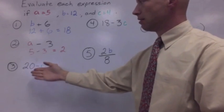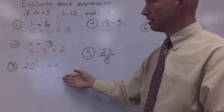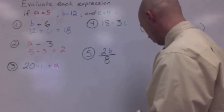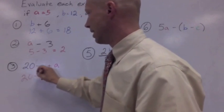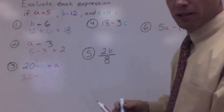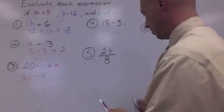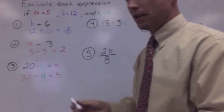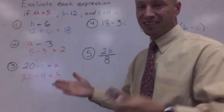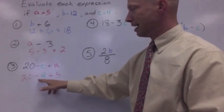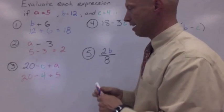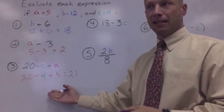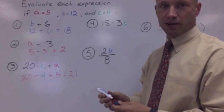Number three, 20 minus C plus A. We've got two variables this time. It's no problem. They both have values that we've been given. 20 minus C, we know C is four, we'll do that in green. Plus A, we know A is red, and that's five. 20 minus four plus five. Looking at my order of operations, minus and plus, they come at the same time. It doesn't matter. 20 minus four is 16, and 16 plus five is 21. Don't worry if you can't do that mentally quite as fast as I can. You can take your time on that, but you still should come up with 21 as the correct answer.